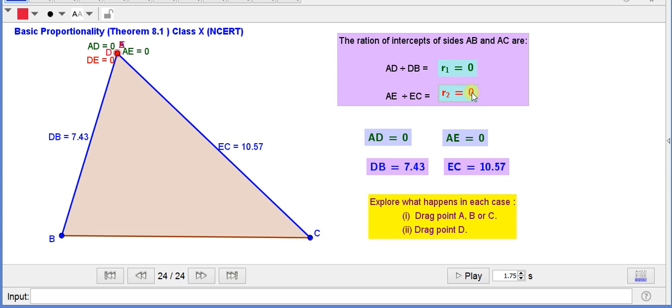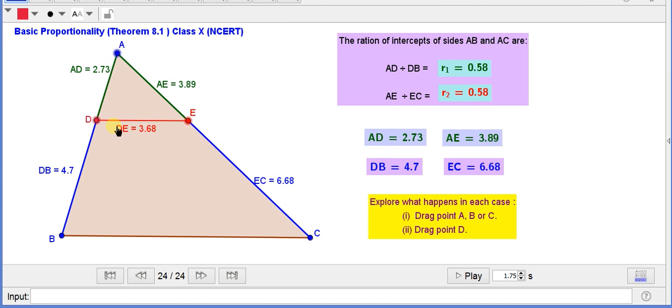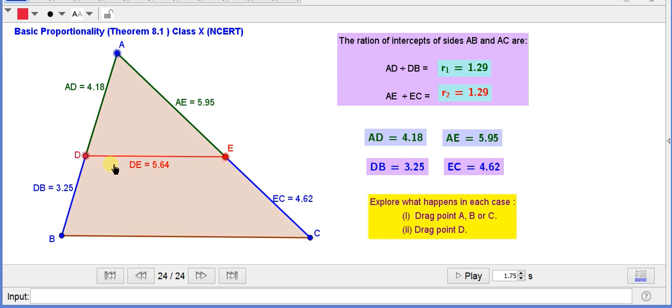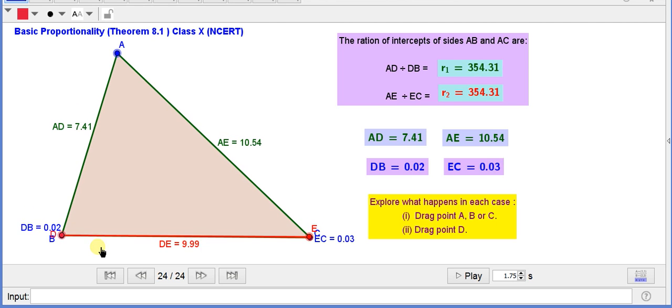Now, let us see at the other end. Now, I am dragging this point D to point B, this B and D are overlapping each other. Now, you see here, AD is equal to 7.43, AE is also 10.57, DB is 0, and EC is also 0.